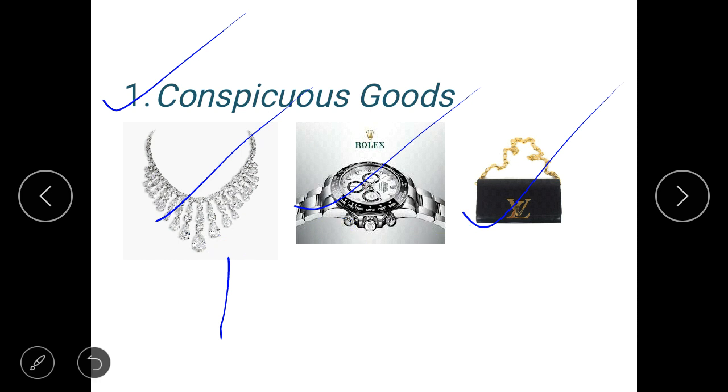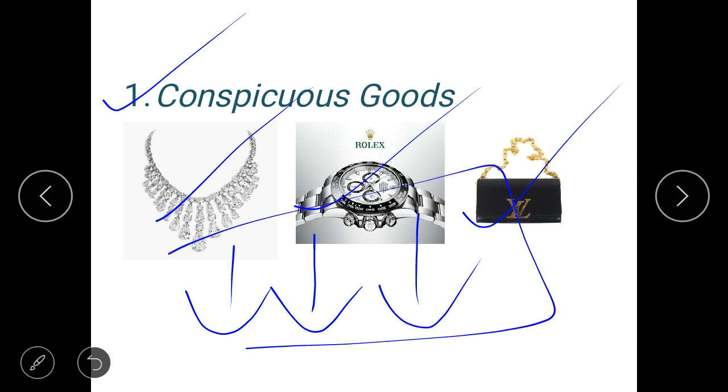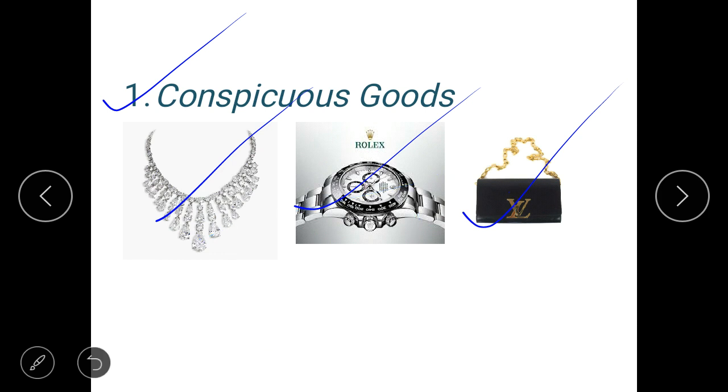Now when the price of these goods decreases, the prestige value associated with these goods also decreases, which in turn leads to the decrease in demand for these goods. So you see these goods, they are in direct contradiction to your law of demand.